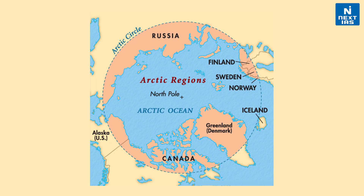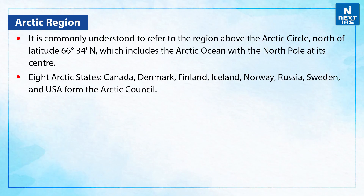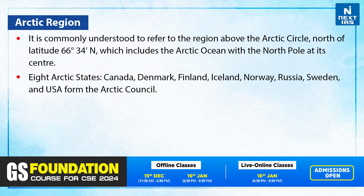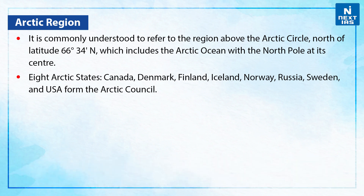Now let's discuss the Arctic region. It is commonly understood to refer to the region above the Arctic Circle, north of latitude 66 degrees 34 minutes north, which includes the Arctic Ocean with the North Pole at its centre. There are eight Arctic states that form the Arctic Council: Canada, Denmark, Finland, Iceland, Norway, Russia, Sweden and the United States of America.